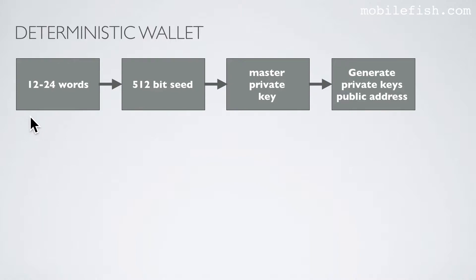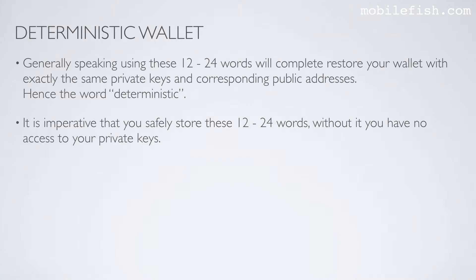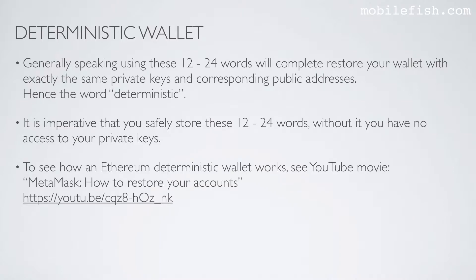Here is an overview of what happens inside the deterministic wallet: it generates 12 to 24 words which are used to create a 512-bit seed, the 512-bit seed is used as input to create a master private key, and the master private key is used to generate private keys and public addresses. Using these 12 to 24 words will completely restore your wallet with exactly the same private keys and corresponding public addresses — hence the word deterministic. It is imperative that you safely store these 12 to 24 words; without them you have no access to your private keys.